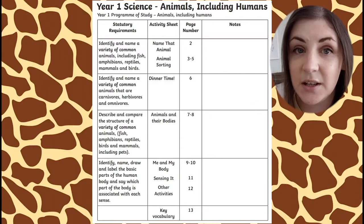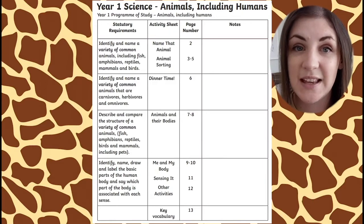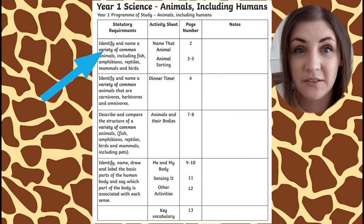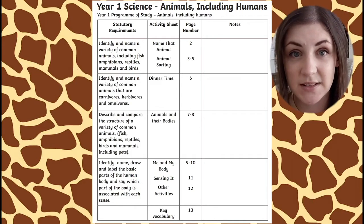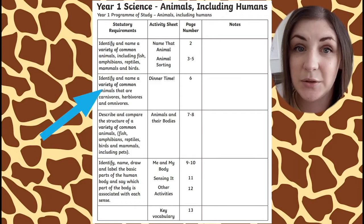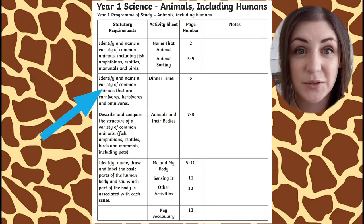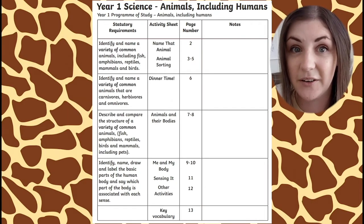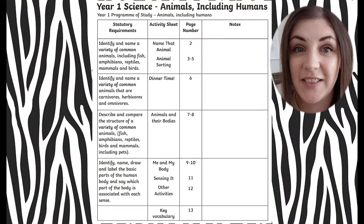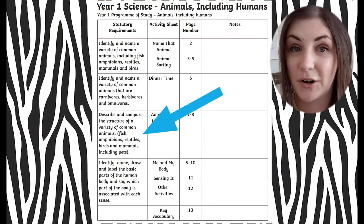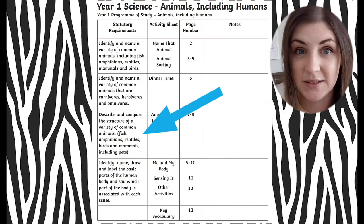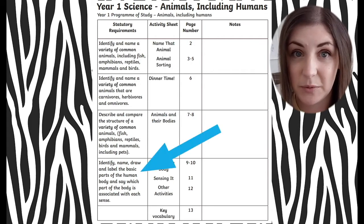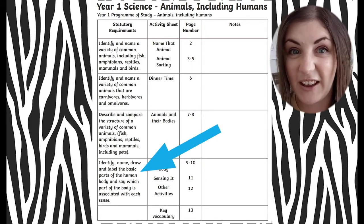Specifically in Year One, children will start to be able to identify a variety of animals including mammals, reptiles, fish, birds, and amphibians. They'll also be taught about whether animals are carnivores, omnivores, or herbivores and be able to use this vocabulary. Alongside this, they'll learn about the structure of a variety of animals including humans, and be able to identify which part of the human body is associated with the five senses.